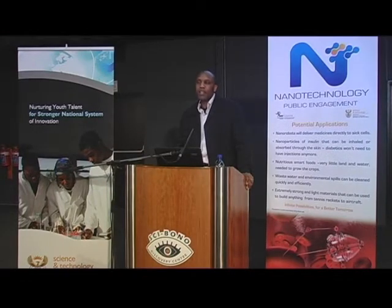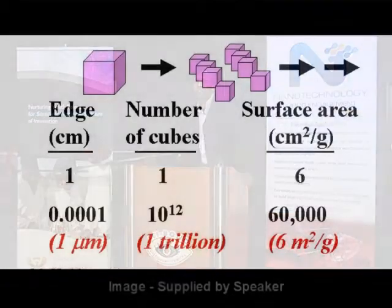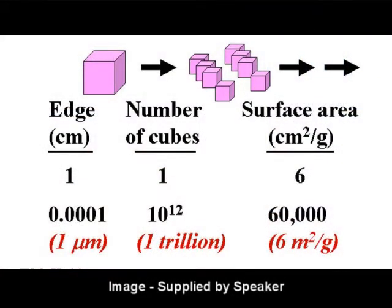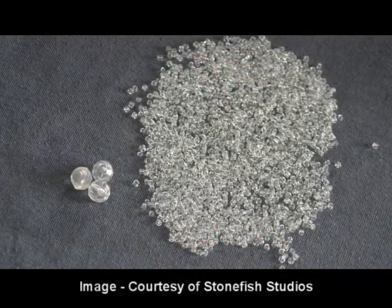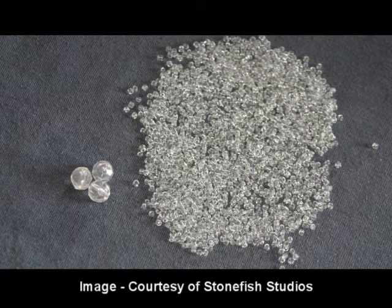The surface area property is rather special and the easiest one to understand. If you make your particles smaller, you increase the proportion of molecules or atoms which are on the surface. Therefore, you make a material that will react much more easily than it would if you were dealing with one huge lump of material with a low surface area.